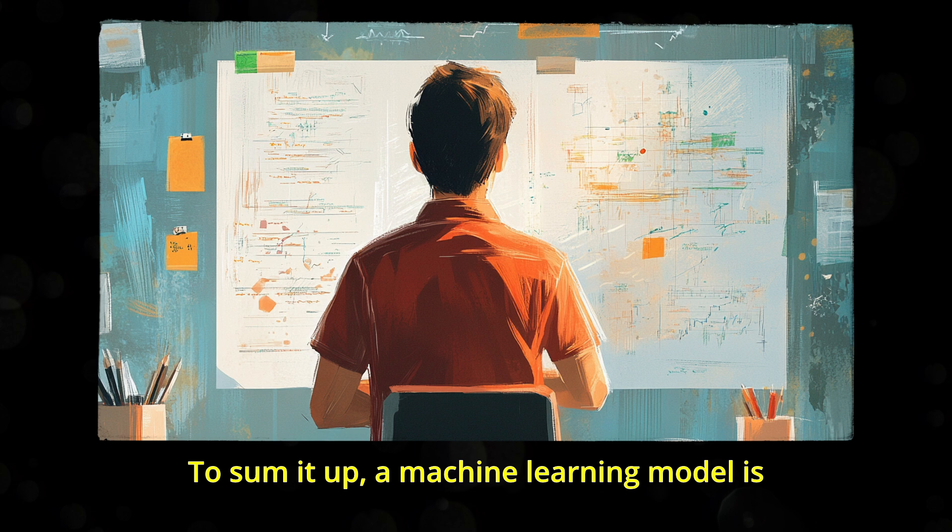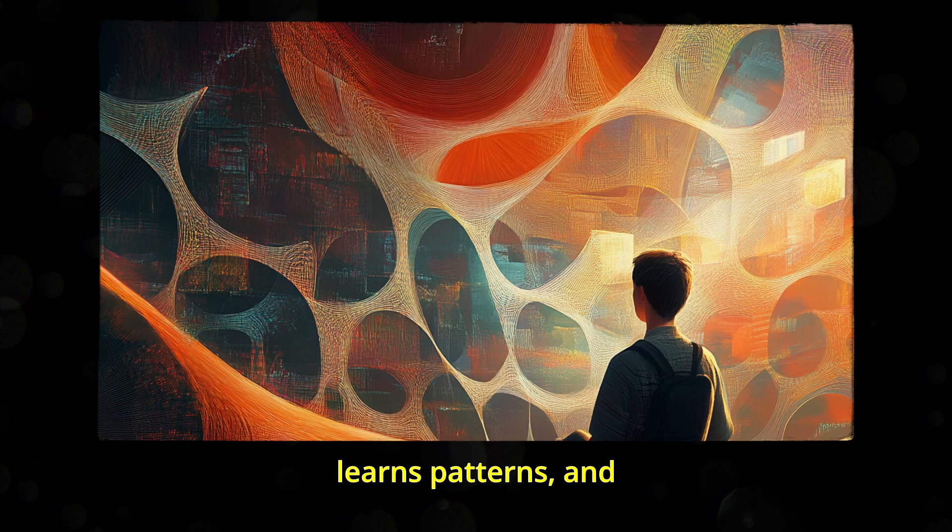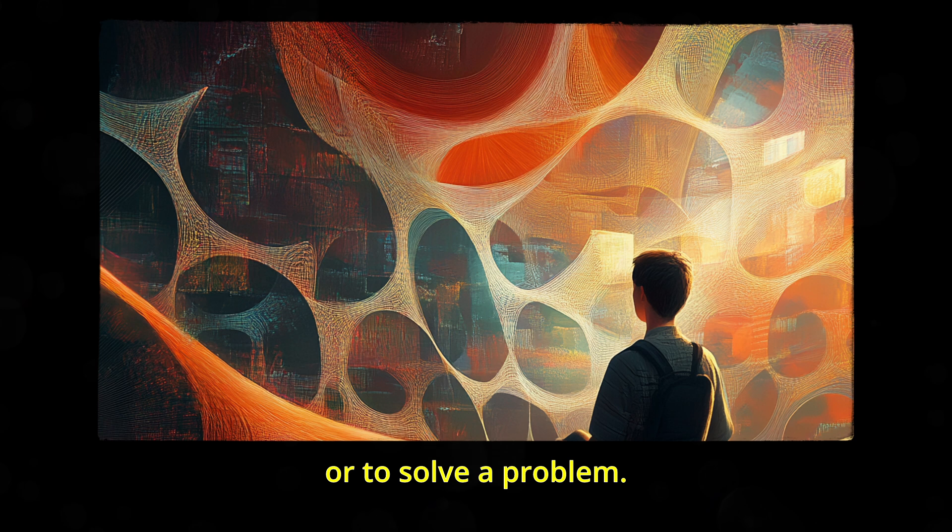To sum it up, a machine learning model is like a digital apprentice. It takes in a lot of data, studies it, learns patterns, and then applies what it learned to create something new or to solve a problem.